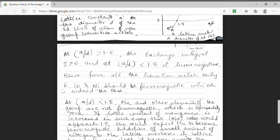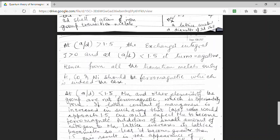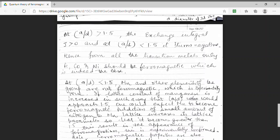On addition of small amount of nitrogen to manganese, it has been found that its lattice constant increases. So A by D factor increases and it becomes greater than 1.5. Hence there will be an appearance of ferromagnetic behavior by addition of nitrogen in manganese.